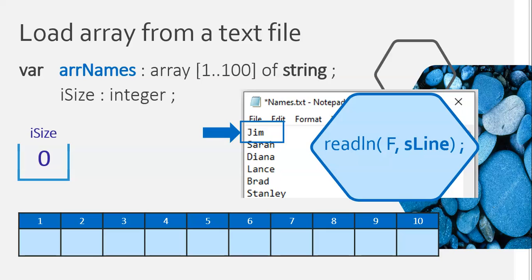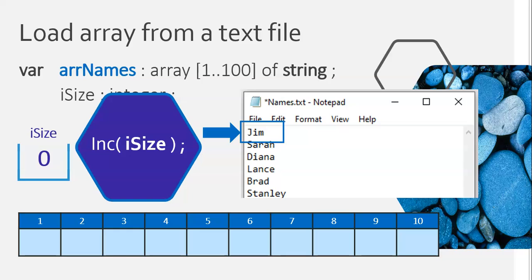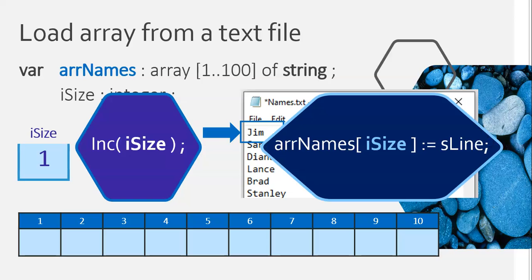Here is the key: before we can insert Jim into the array, you must always do this step first. You must increase your array size. Although we've got nothing in there, we first want to put a new value in, which means increase array size to one — that is the position of where Jim must go. So we always increase array size first. Then at position array size, at position one, we put the value in S line, which is Jim.